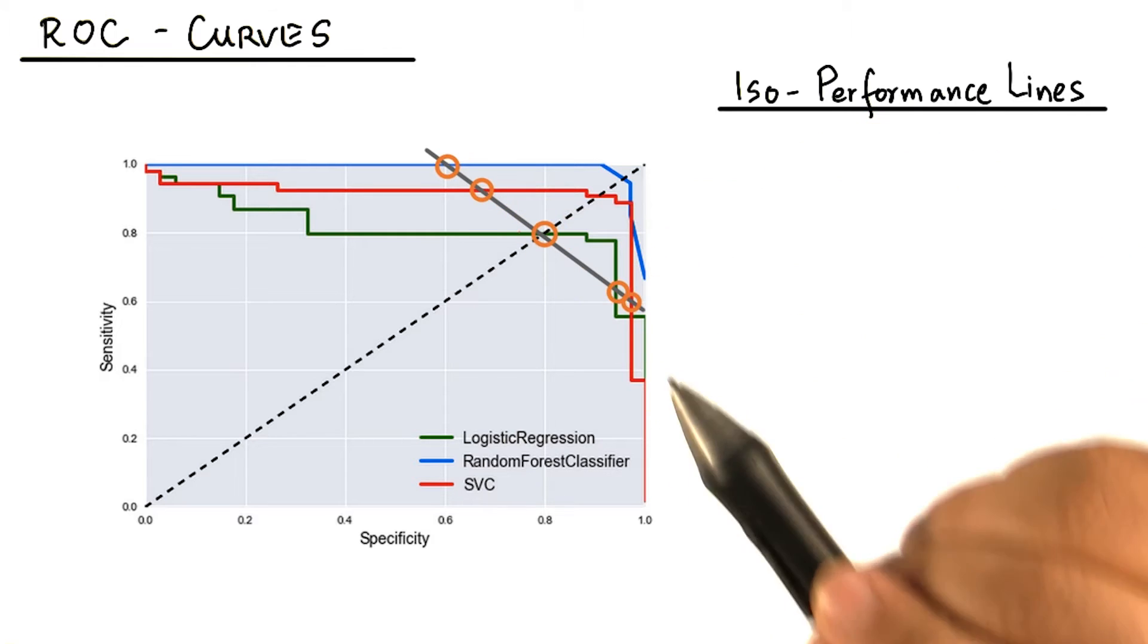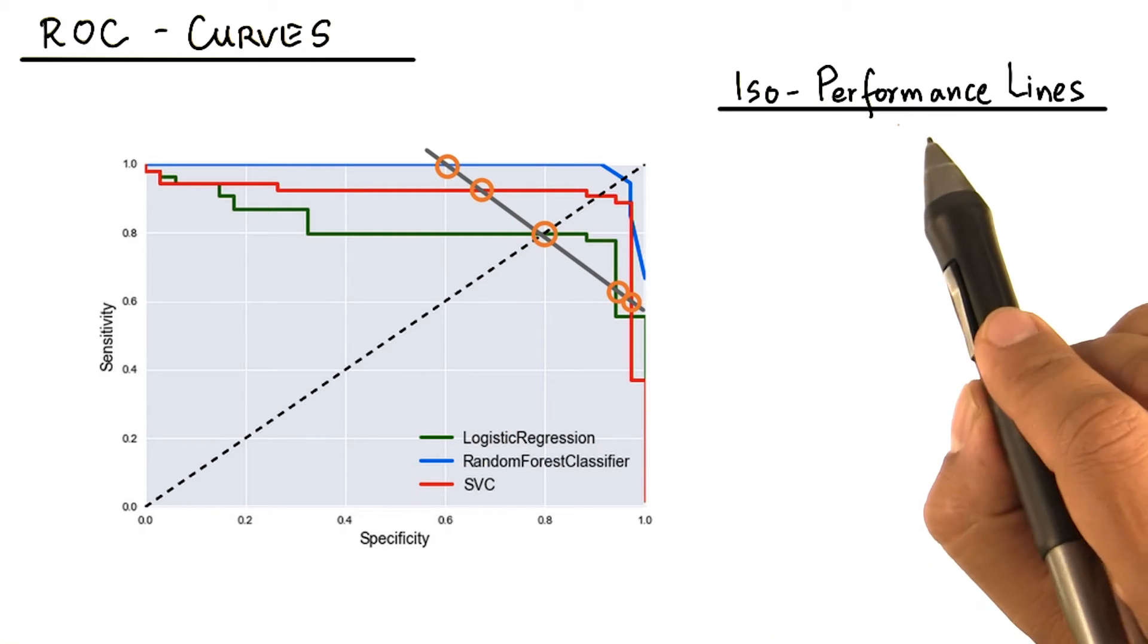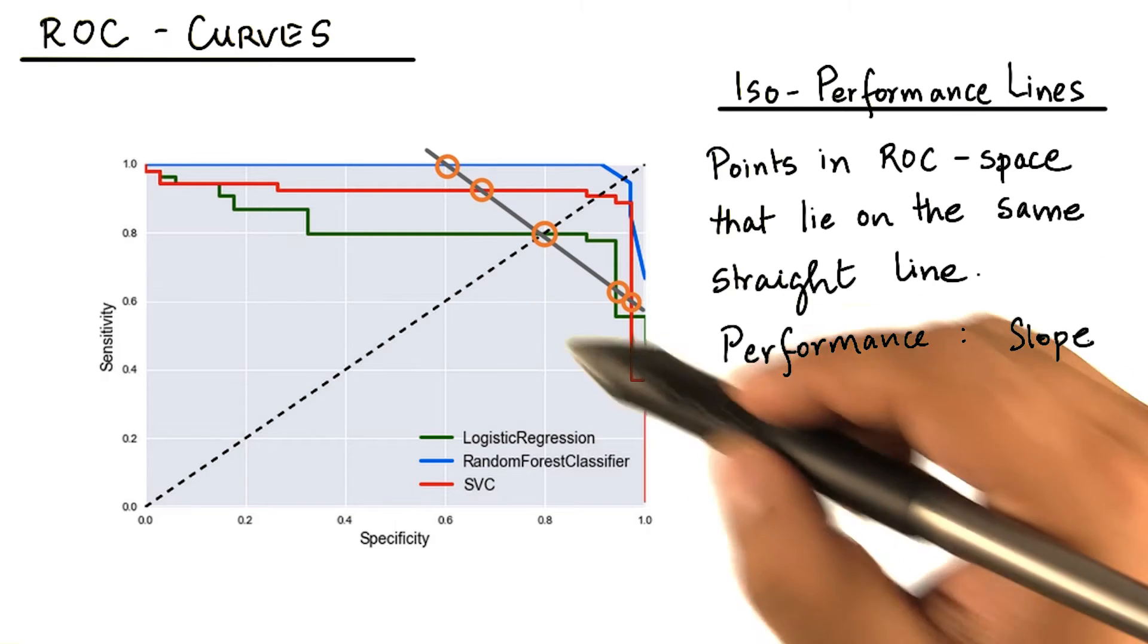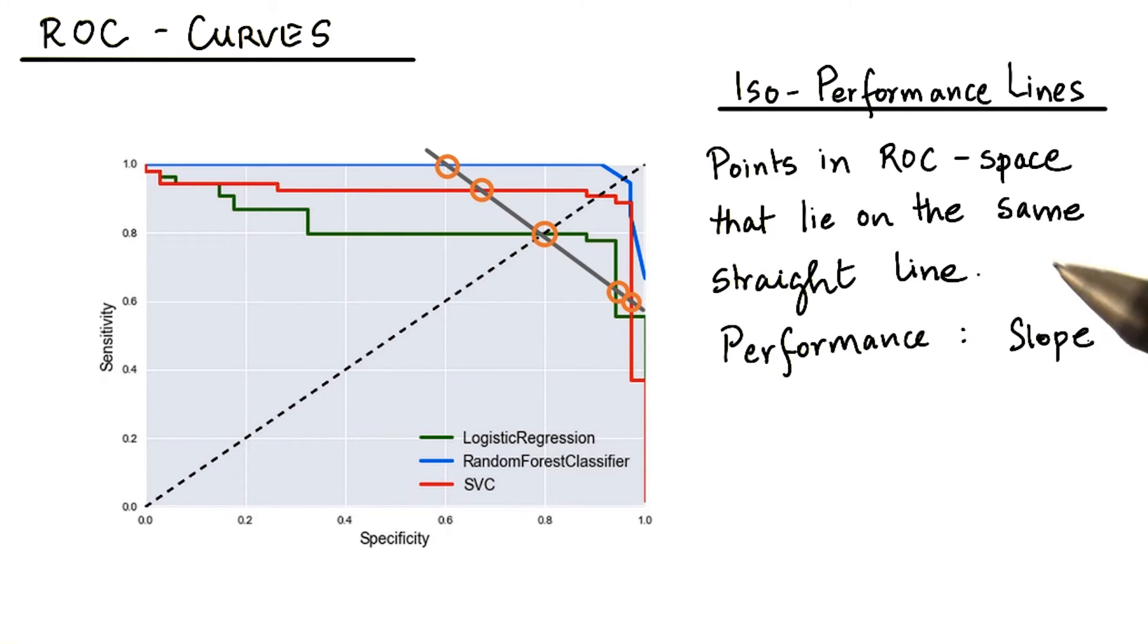All these points have the same performance, and thus they fall on ISO performance line. So you see these lines can be determined by the objective of optimization, such as the lines that can give maximum accuracy or specificity or sensitivity.